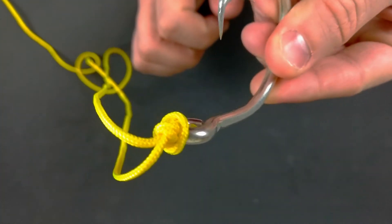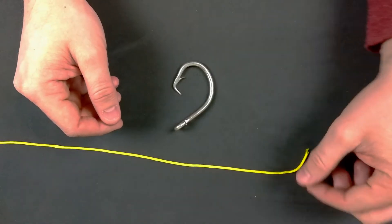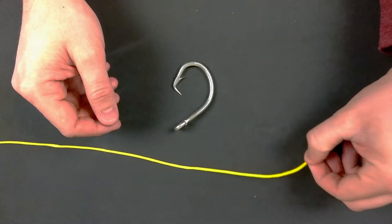Hello and welcome. For today's knot, we're going to take a look at the Palomar knot. The Palomar knot is arguably the best knot for fishing fluorocarbon.